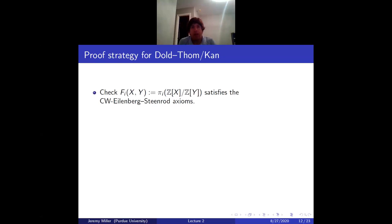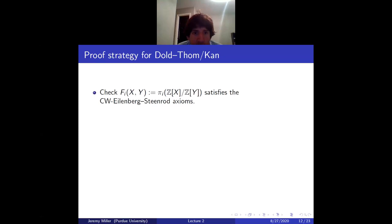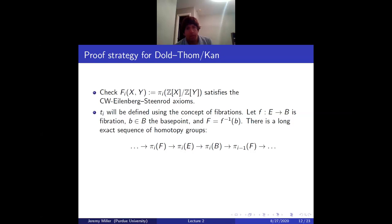Our proof strategy for the Dold-Kahn theorem is to check that the functor sending a pair of spaces to pi_i of the free abelian group on X modulo the free abelian group on Y satisfies the Eilenberg-Steenrod axioms. We'll only check it for CW complexes, and then we'll only get the theorem for CW complexes, but that's fine. The connecting homomorphism, if you know what a fibration is, will make sense; if not, we'll revisit it once we've discussed fibrations.